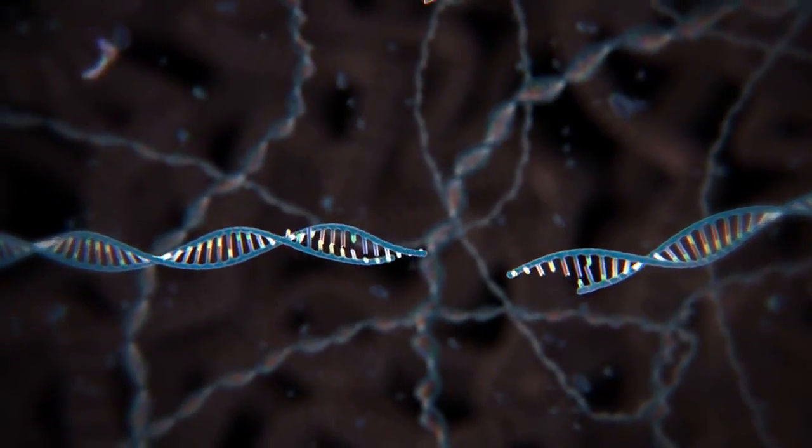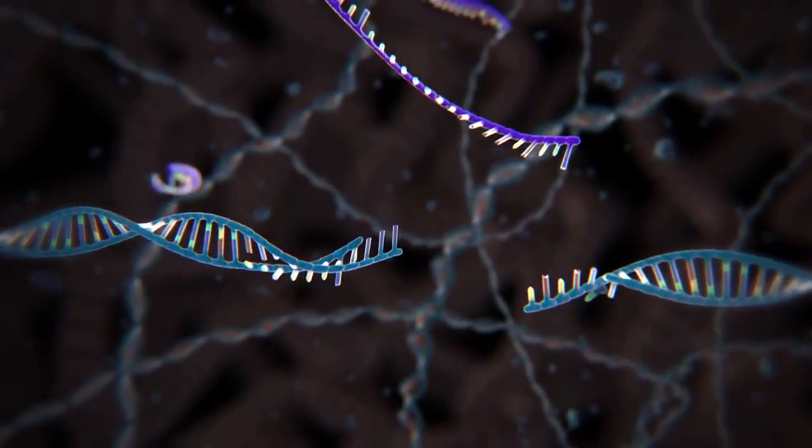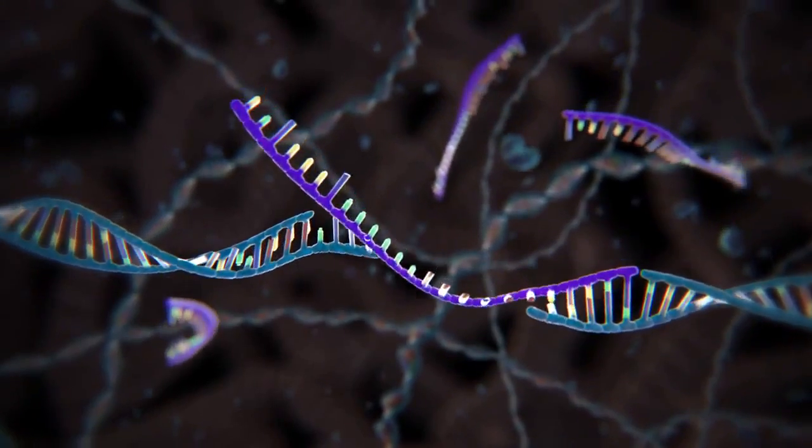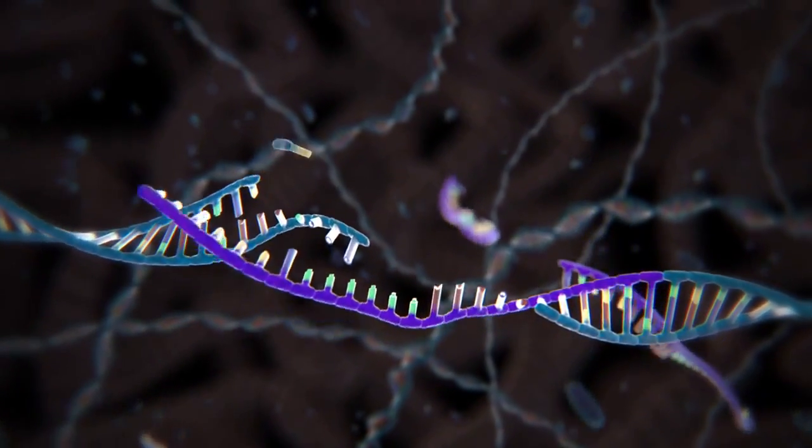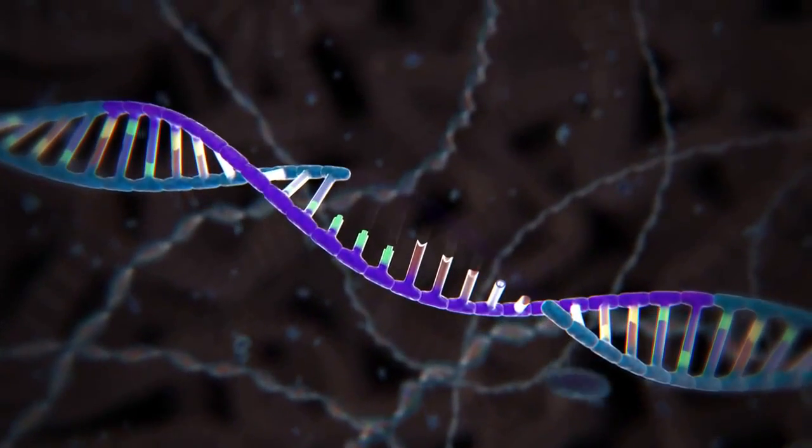This can be done by adding another piece of DNA that carries the desired sequence. Once the CRISPR system has made a cut, this DNA template can pair up with the cut ends, recombining and replacing the original sequence with the new version.